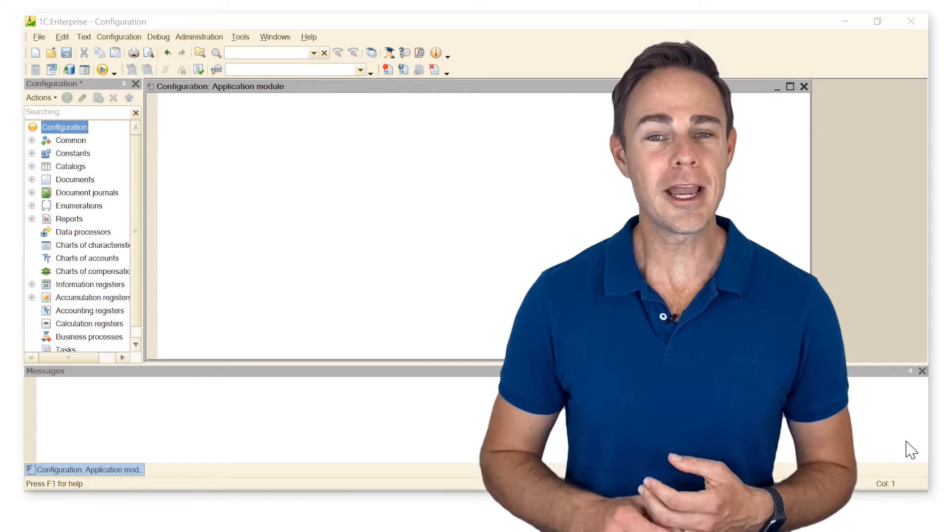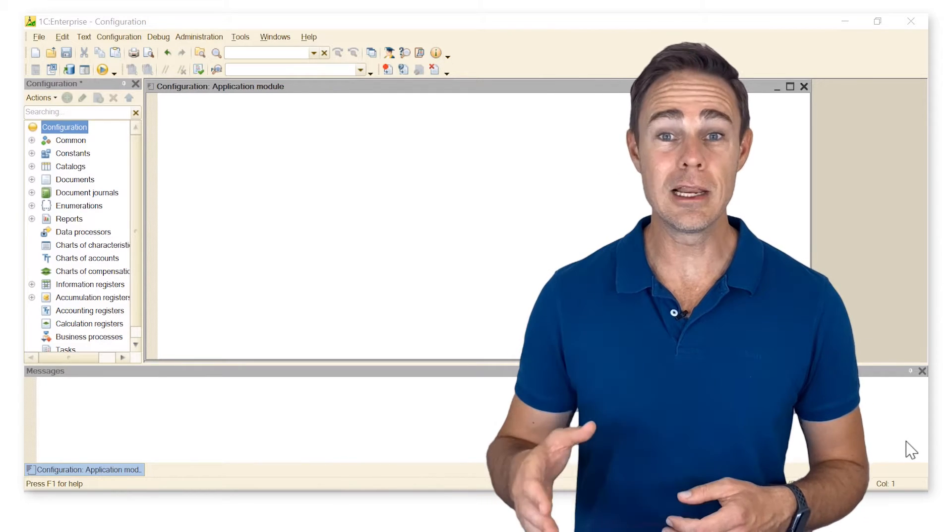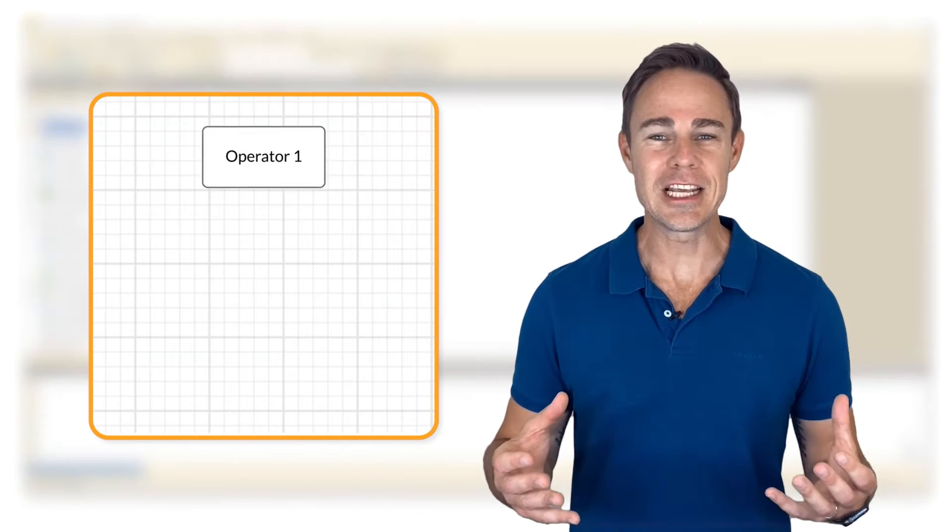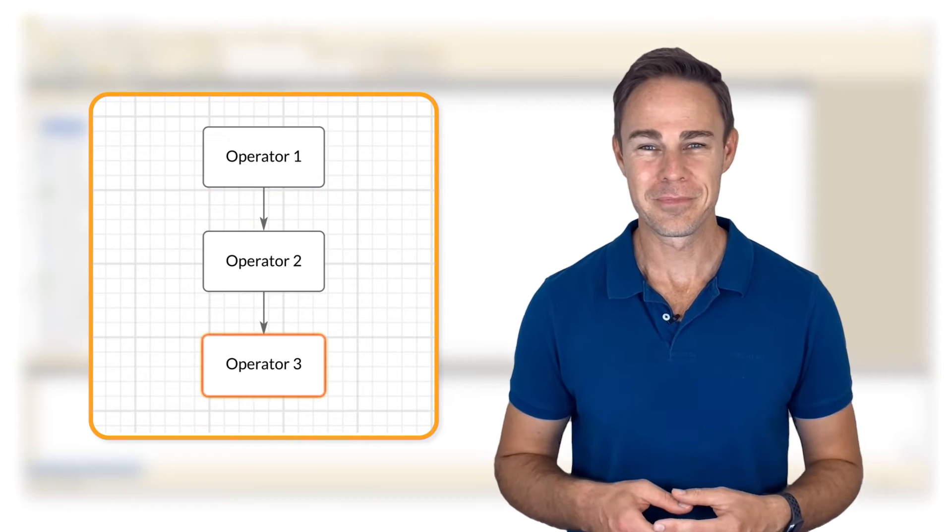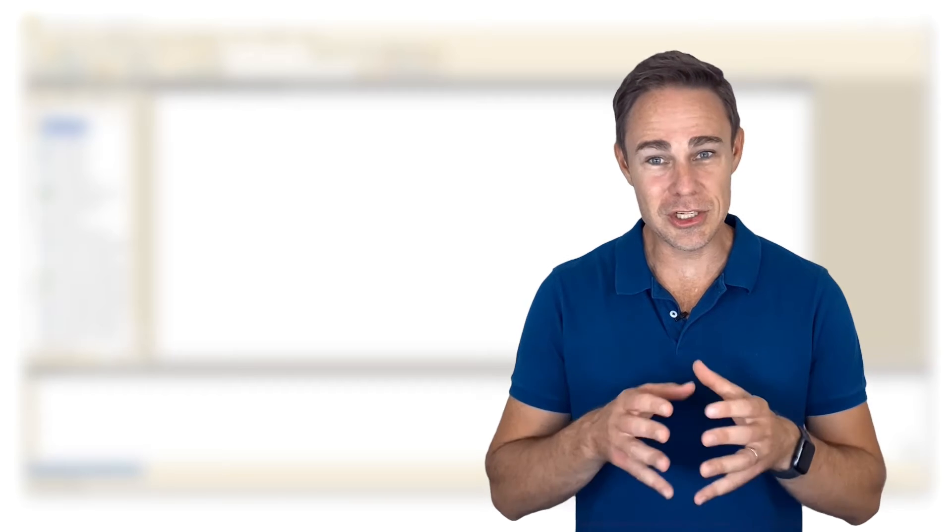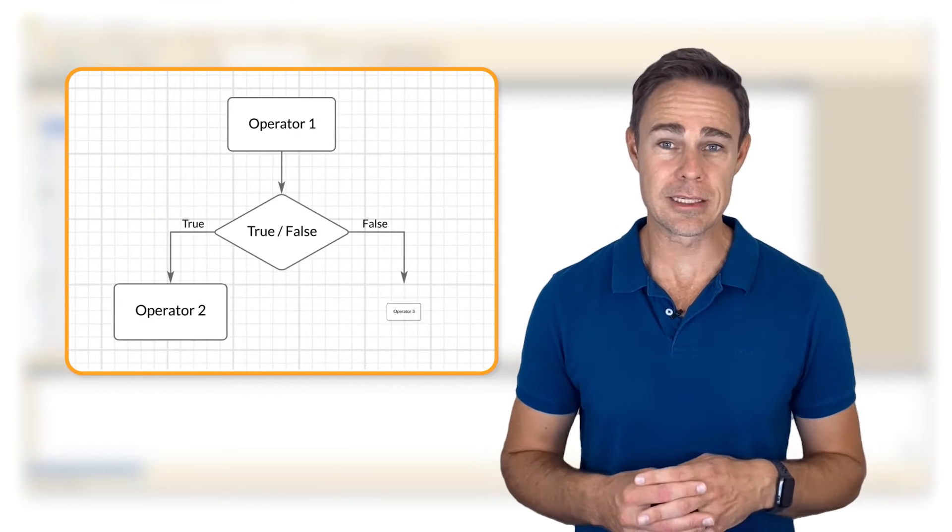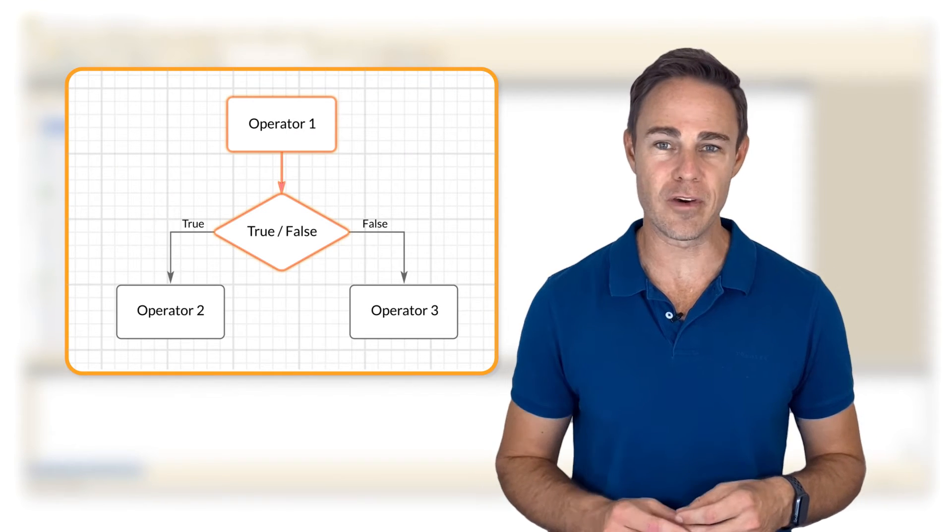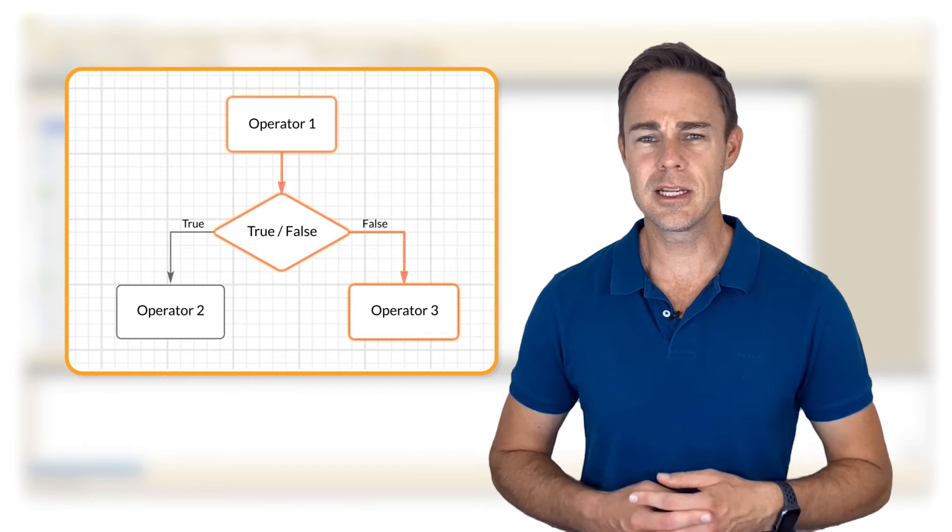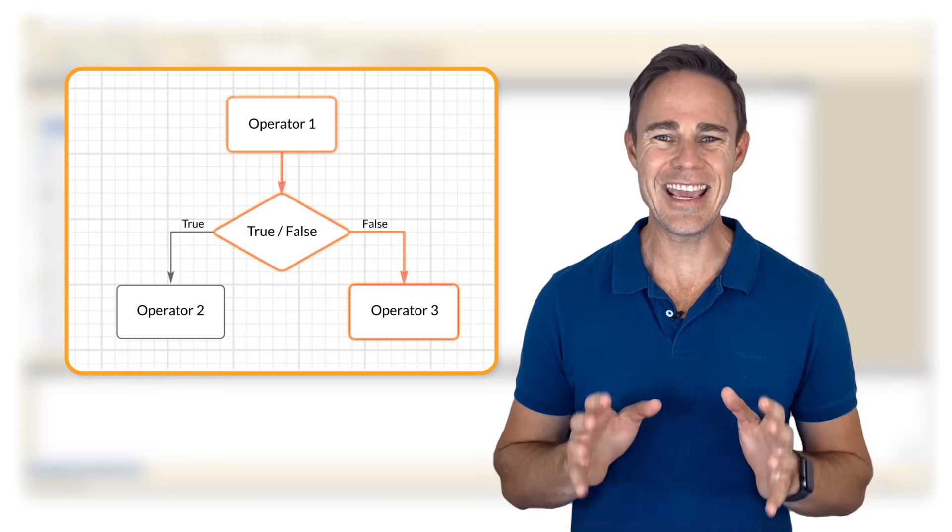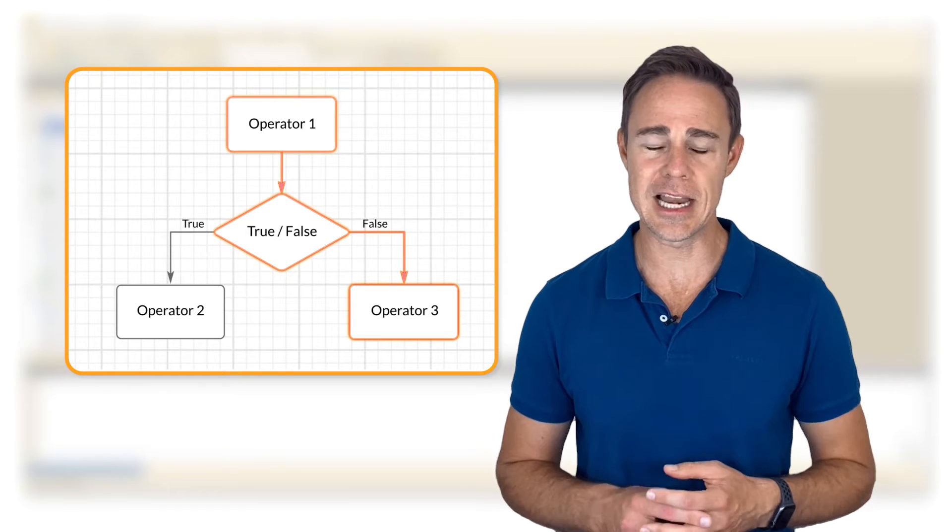Now it's time to write more complicated and nonlinear programs. Usually operators are executed sequentially step by step, but now we want to describe conditional constructs that run the needed branch of operators according to the conditional results true or false. Consider the syntax of the conditional if in the 1C Enterprise language.